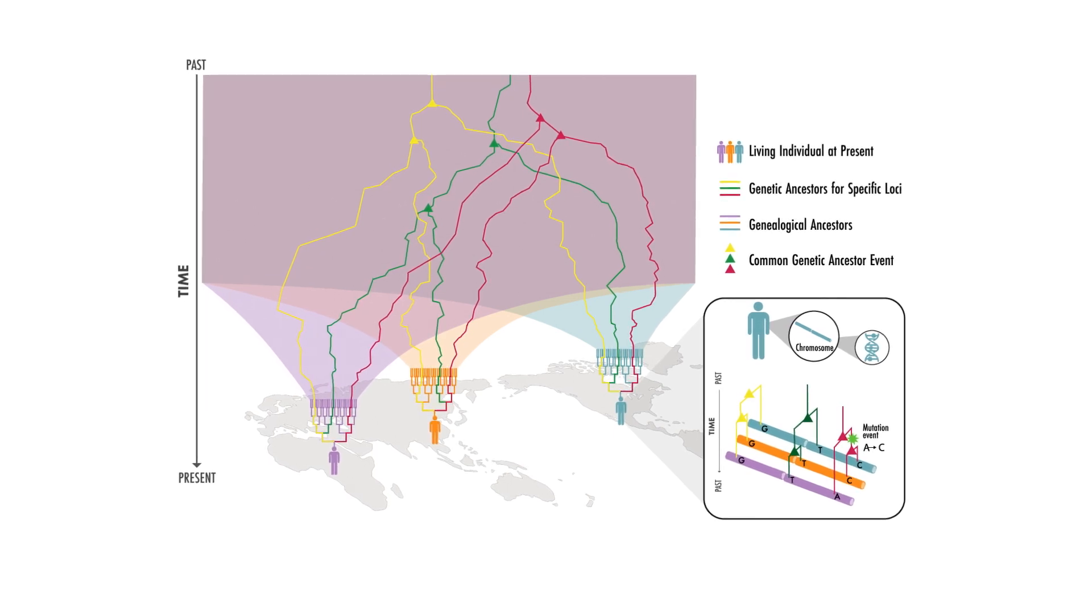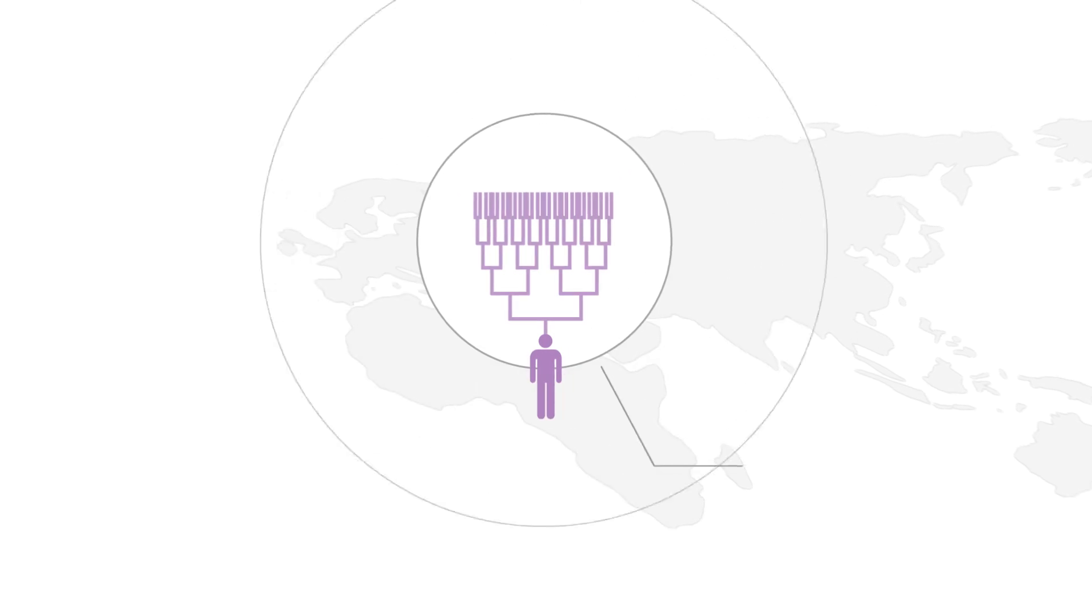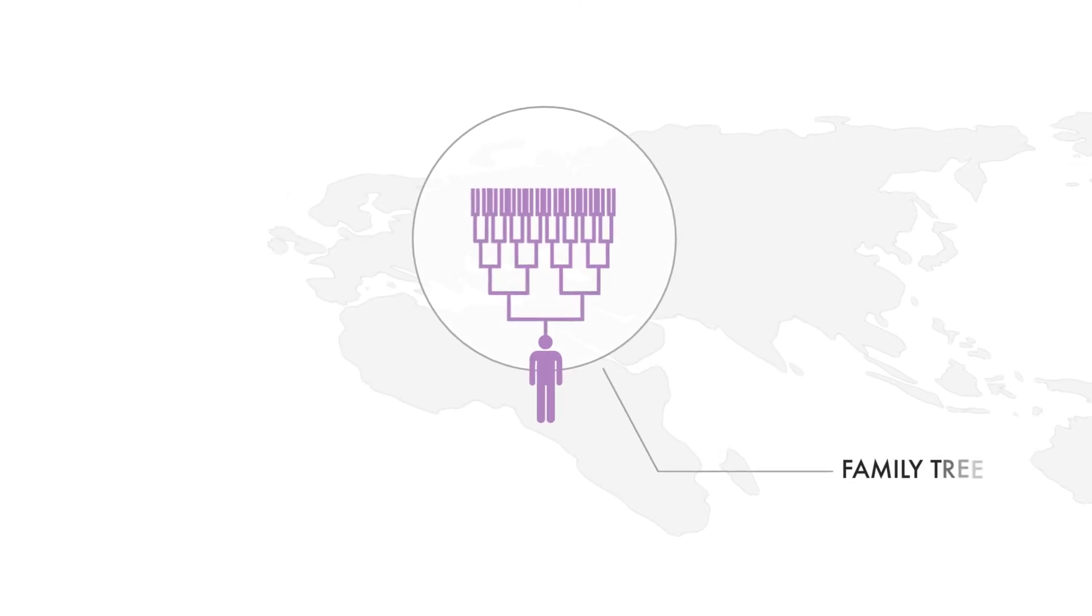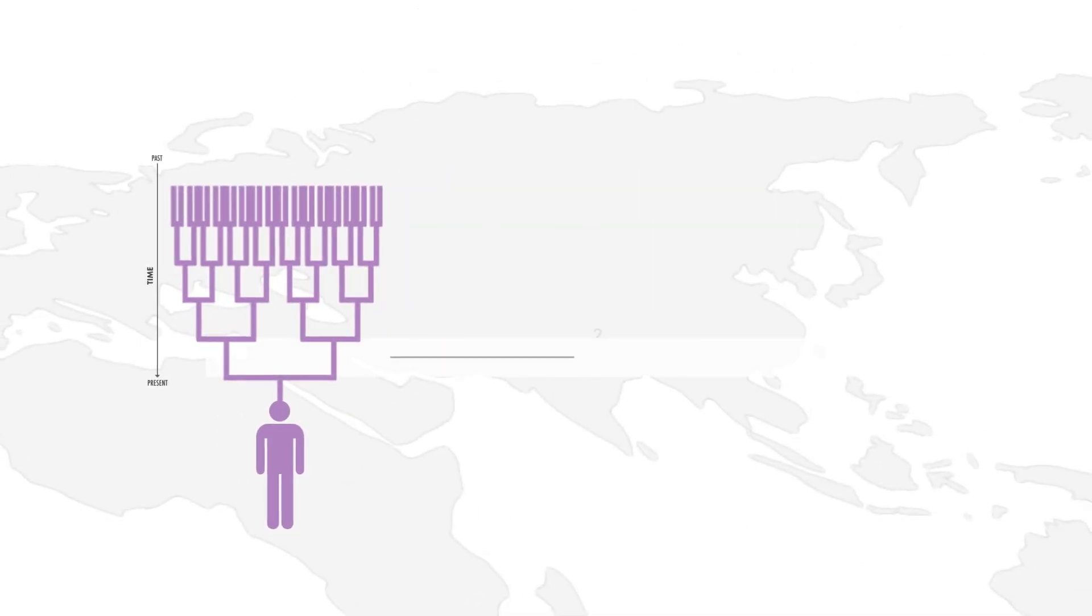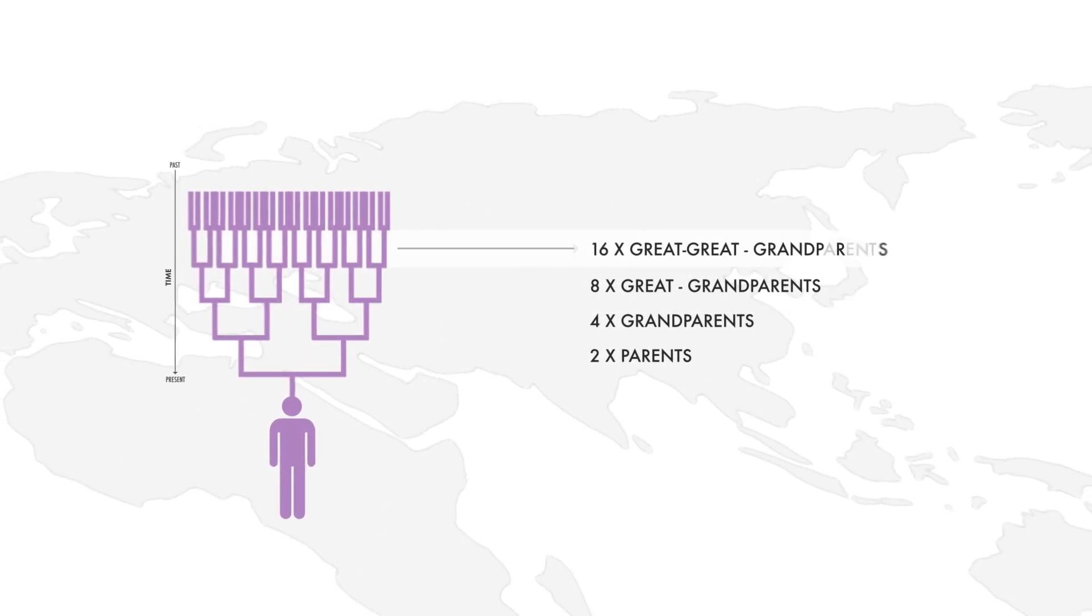If we start with one of these individuals, we see a representation of their genealogy, commonly called a family tree. From the individual, it goes to two parents, four grandparents, eight great-grandparents, and so on, increasing into the past.